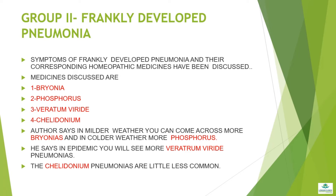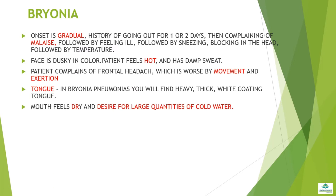Group 2 is frankly developed pneumonia. The medicines discussed are Bryonia and Phosphorus. In milder weather you encounter more Bryonia cases and in colder weather more Phosphorus. In epidemics you will see more Veratrum Viride pneumonias. Chelidonium pneumonias are a little less common.